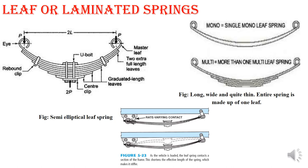The leaf spring, which you may have seen on many vehicles, is shown here as a multiple leaf spring. If there is only one leaf, it is called a mono leaf spring. The leaf spring is made of steel plates in a semi-elliptical shape and is commonly used in automobile rear suspension systems.